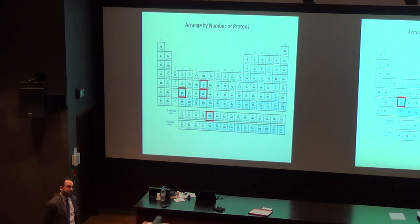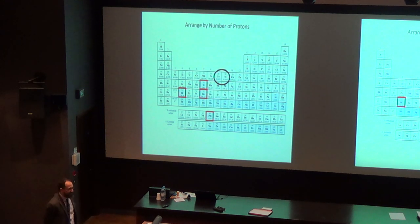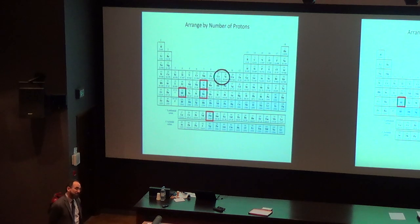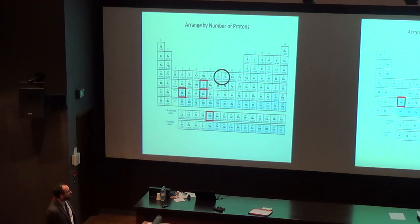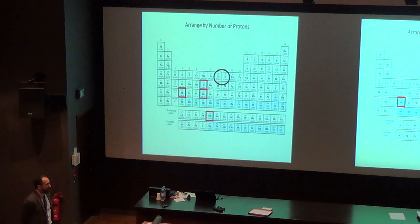Moseley also fixed some problems in the periodic table. There's a little anomaly with cobalt and nickel: cobalt, although it has fewer protons than nickel, has more neutrons and ends up being heavier. People had cobalt on the other side of nickel previously, and Moseley fixed that problem by putting them in the proper order.